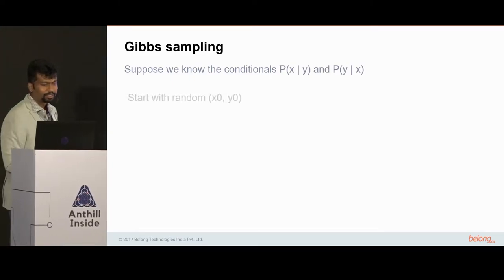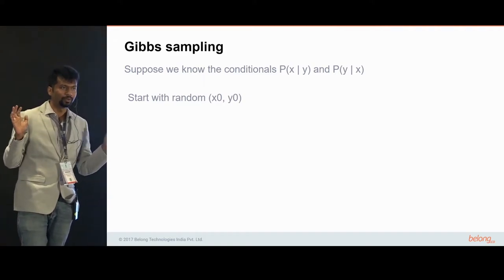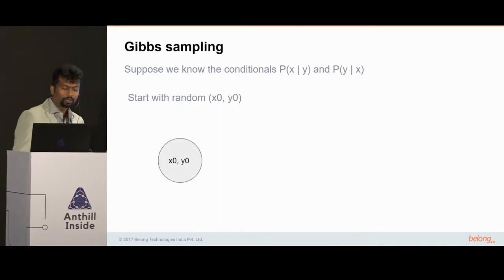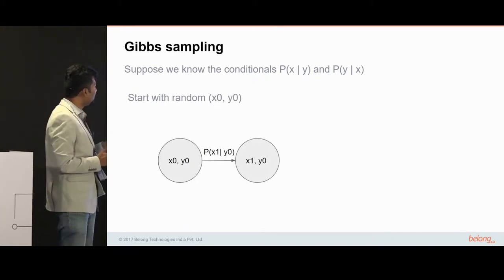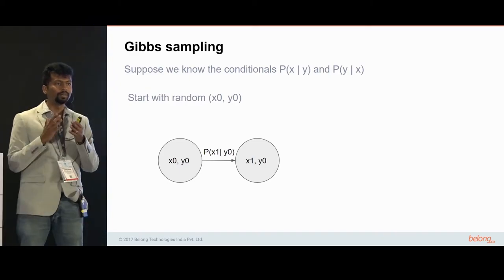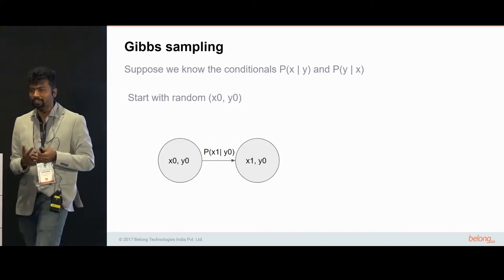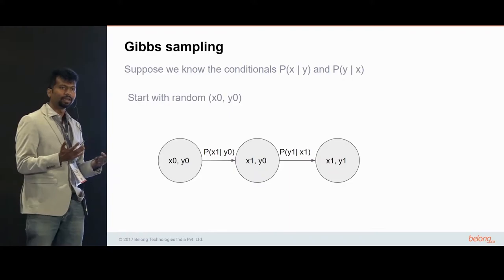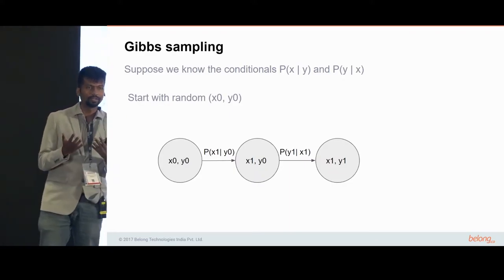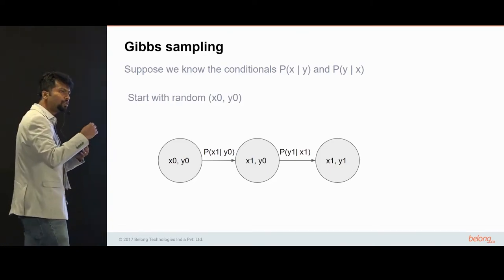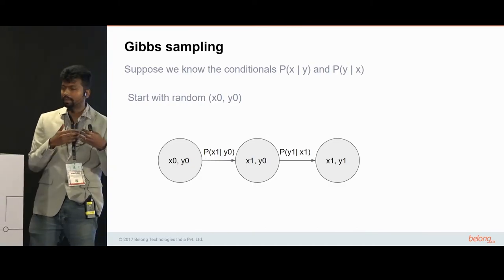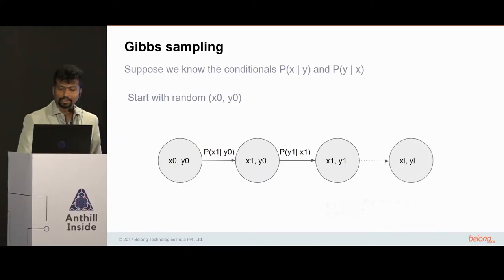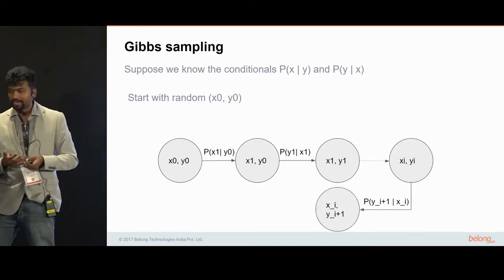Assuming we know the conditionals p(x|y) and p(y|x), the algorithm works as follows. You pick a random point x0, y0 — the probability of that might be close to 0, but don't worry. Then you change the x value to x1 using the conditional probability p(x1|y0). Use the conditional distribution to change the value of x. Now x0 has become x1. In the next step, you change the value of y using the conditional distribution p(y|x), and you iterate this continuously — changing one random variable at every step.